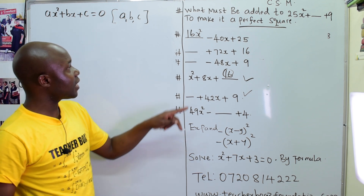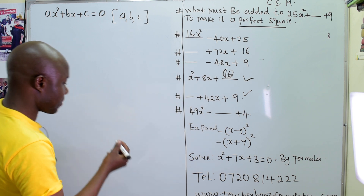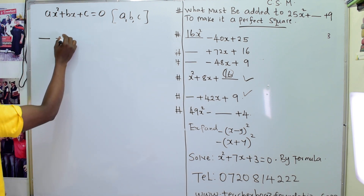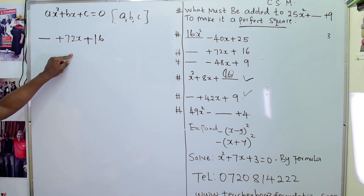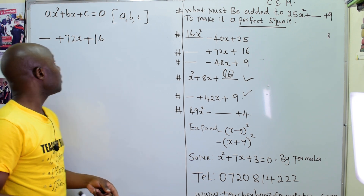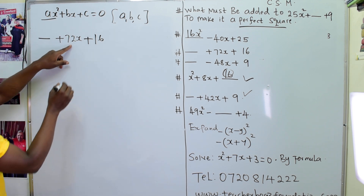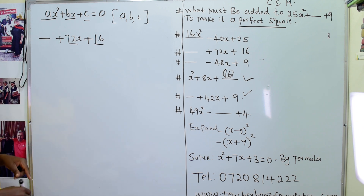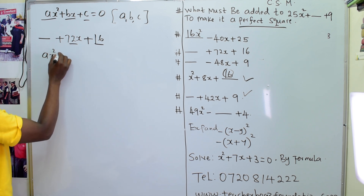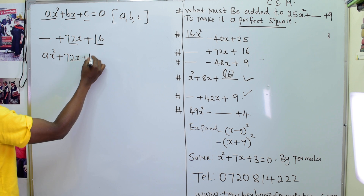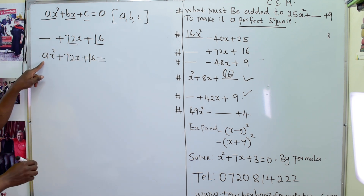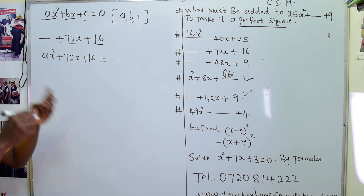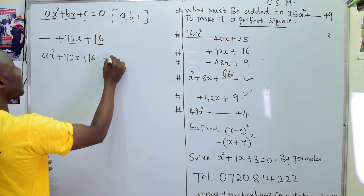Now we do another example. We are given: dash plus 72x plus 16. What must be added to make it a perfect square? Comparing with the original, the x squared part is not given, the bx part is 72x, and c is 16. We let the unknown part be ax squared, so we write ax squared plus 72x plus 16. Taking the square root of a gives another constant, call it n, and square root of x squared is x.